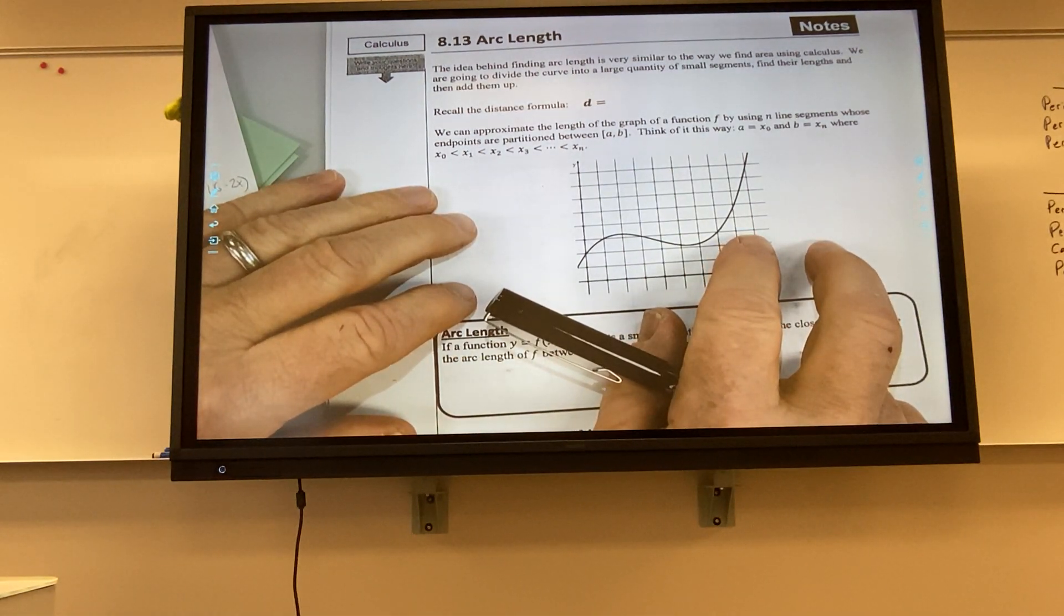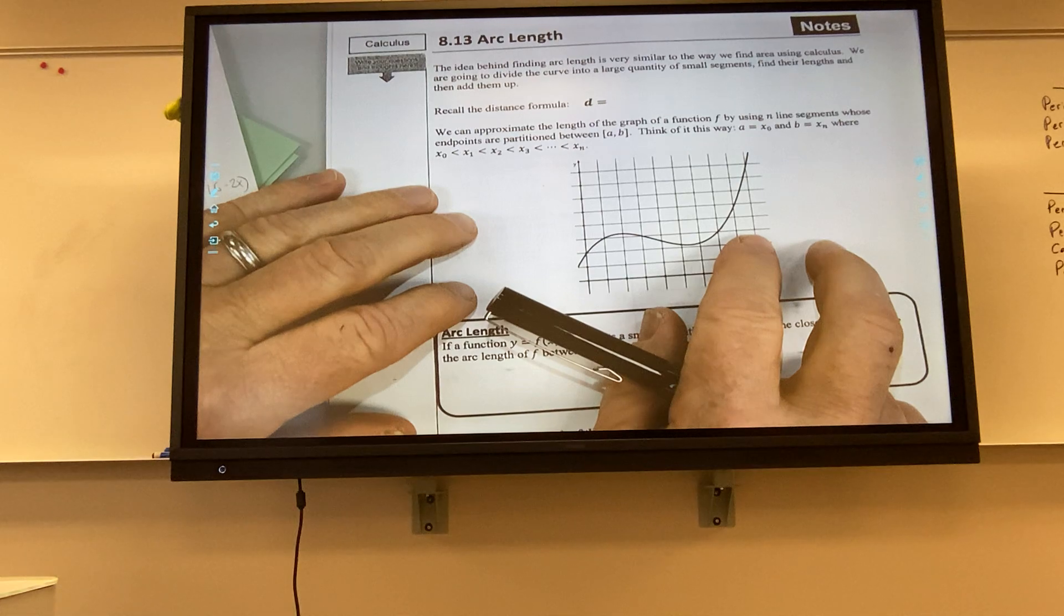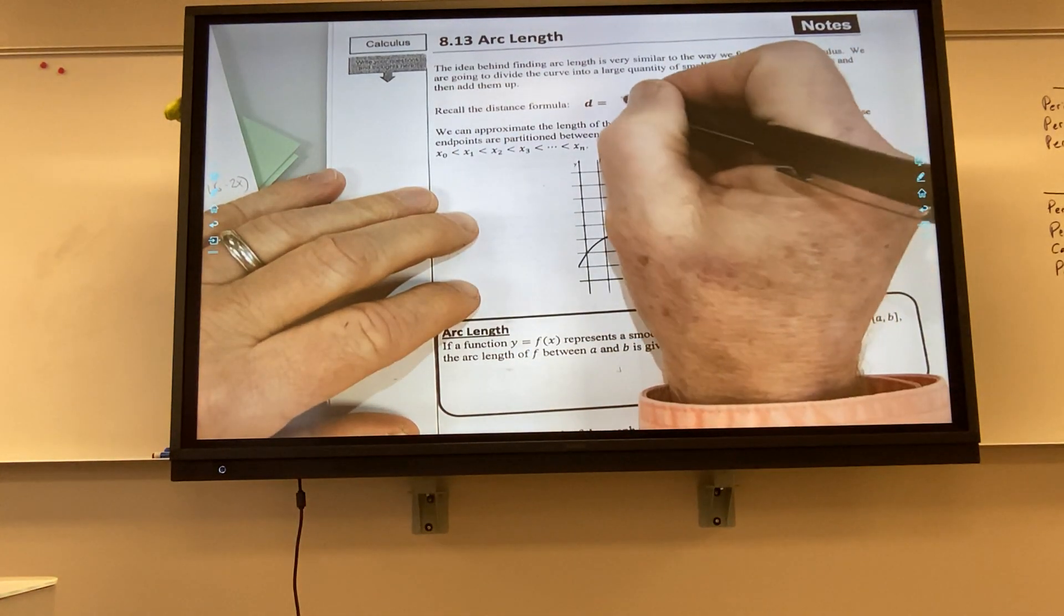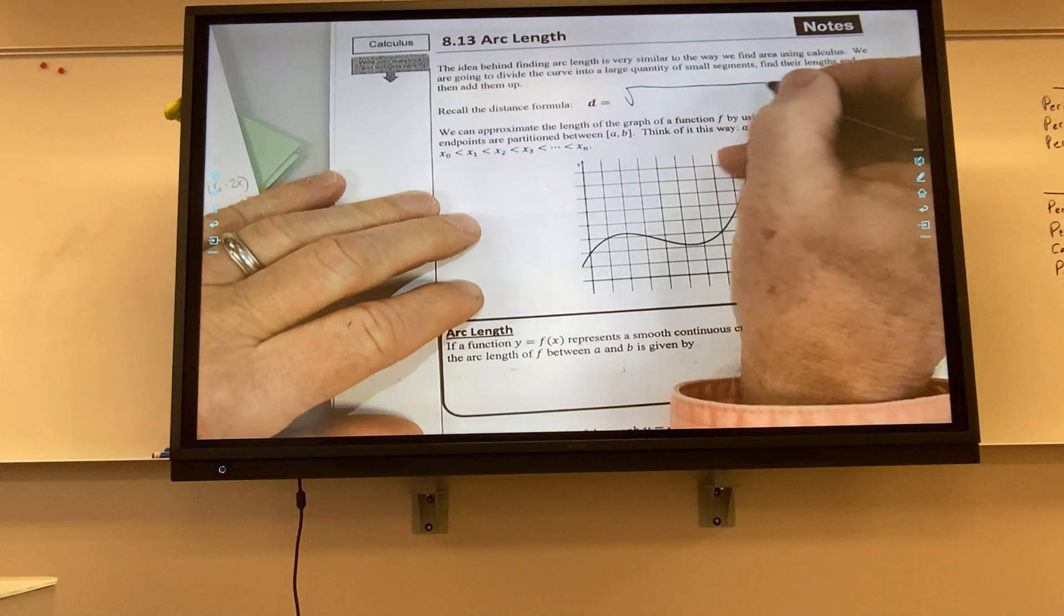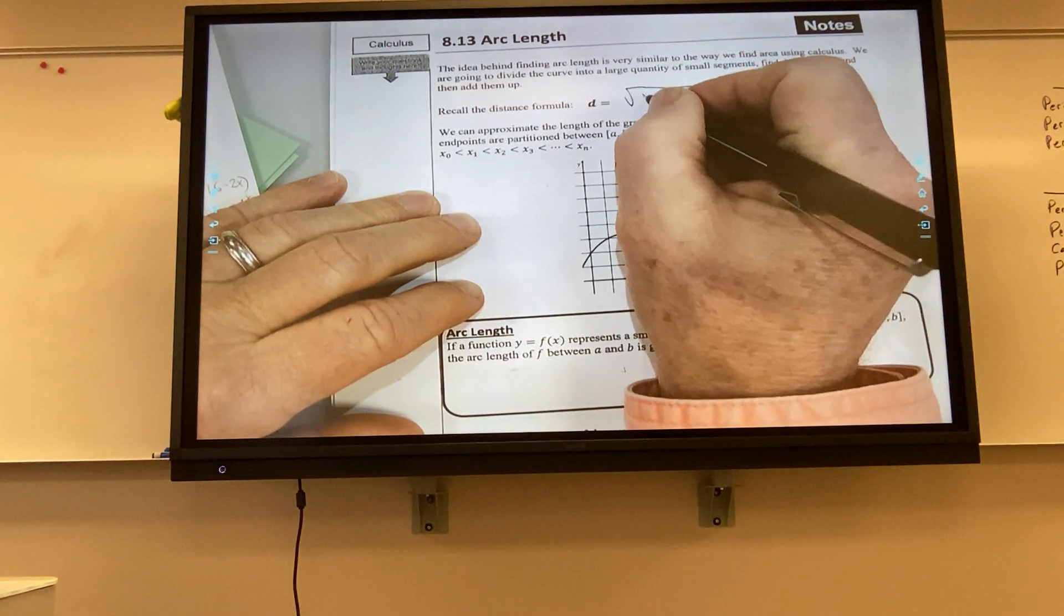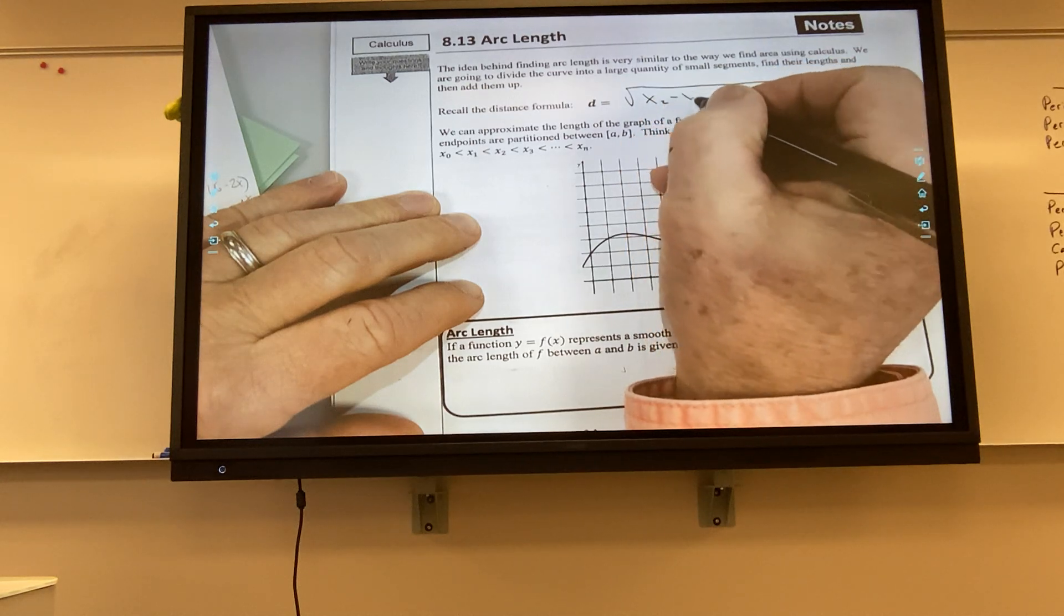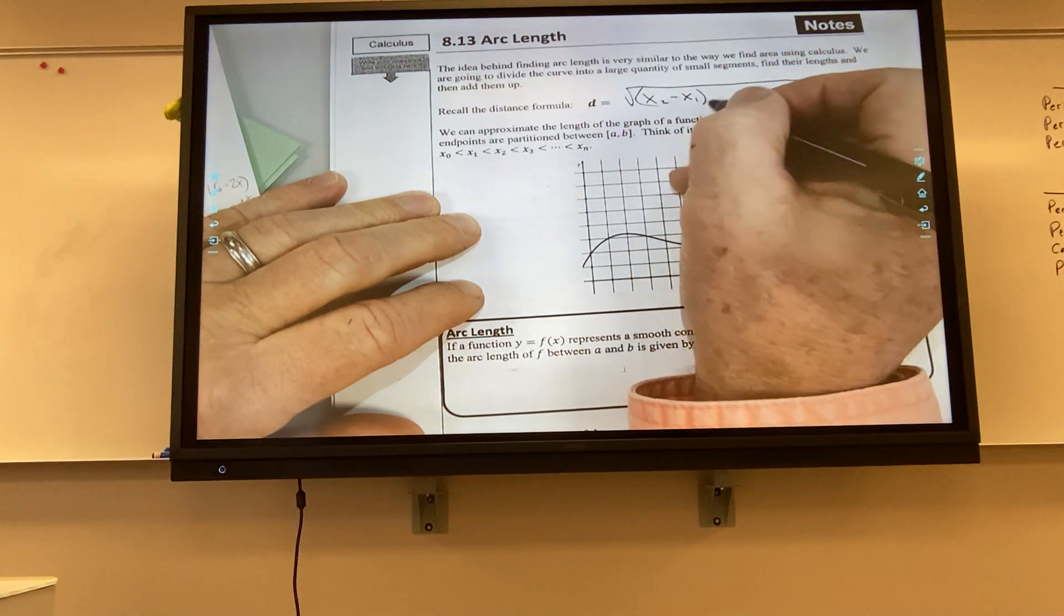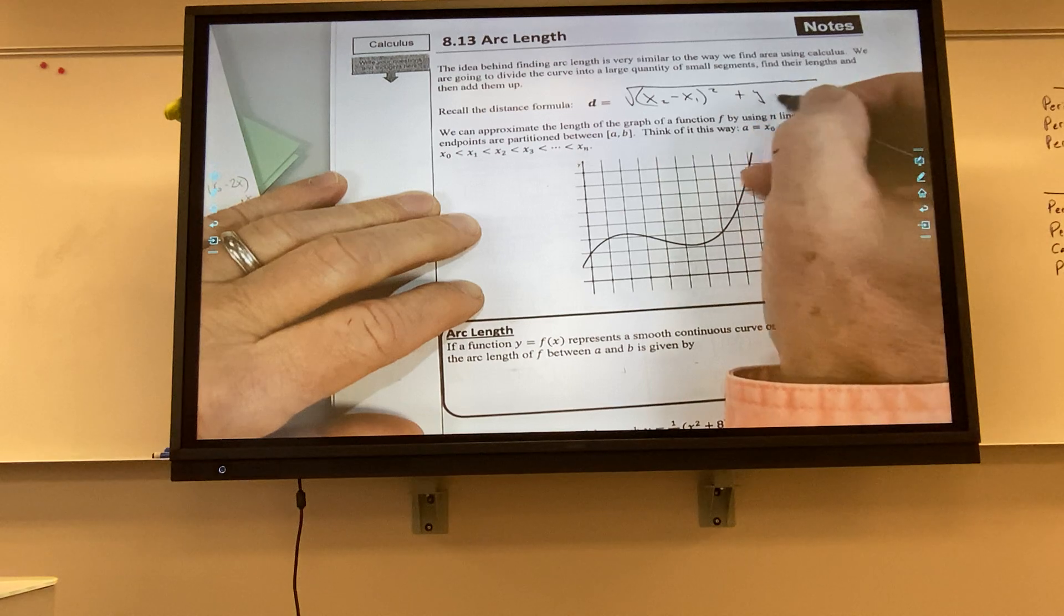Does anybody know where the distance formula comes from? Is it under a square root? Yeah, it is under a square root. Is it y2 minus y1 squared plus x2 minus x1 squared? Yeah, it doesn't matter the order. Can I give you the traditional form? That's very good.